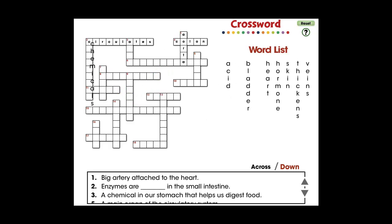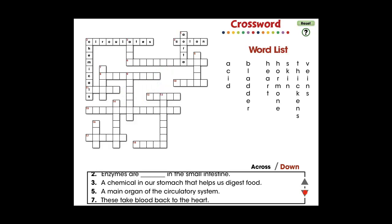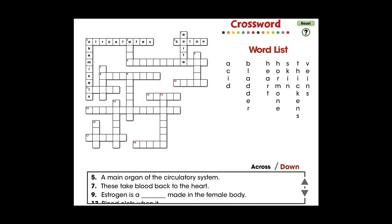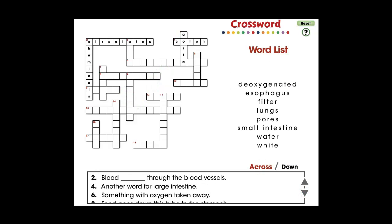Drag a word from the list to its correct position in the puzzle. Use the arrows to scroll through all the clues. Switch between across and down clues and words.